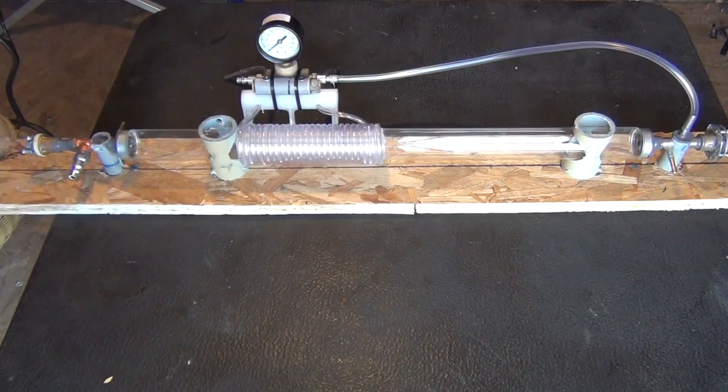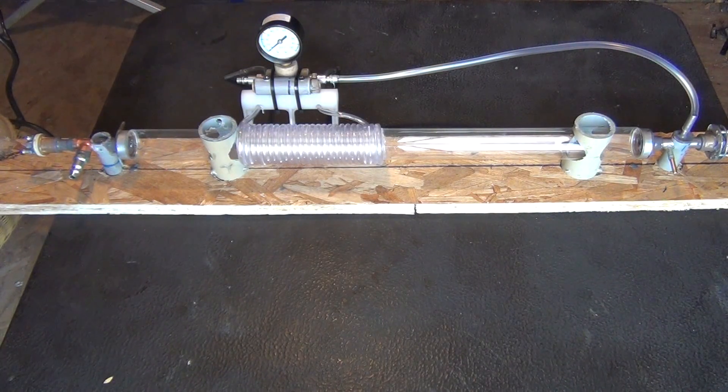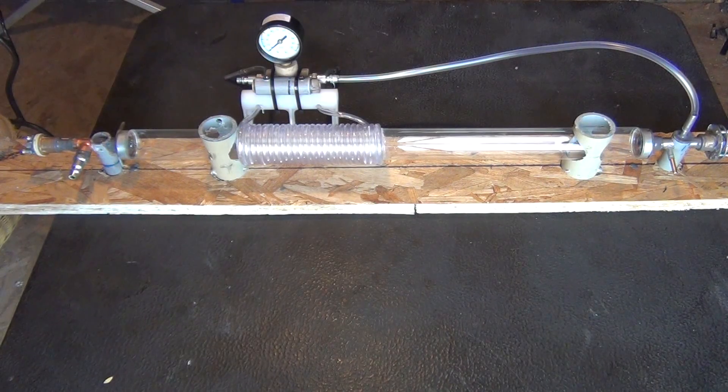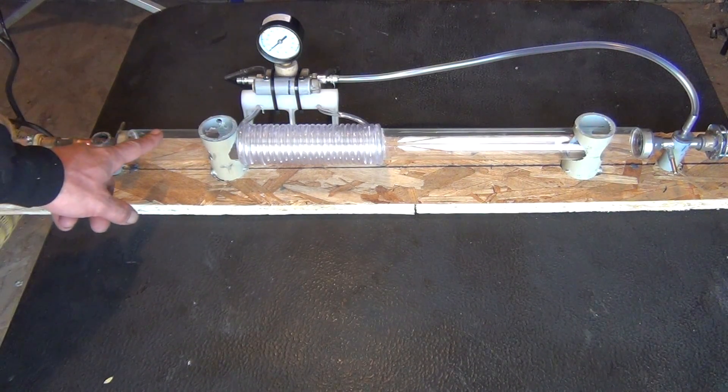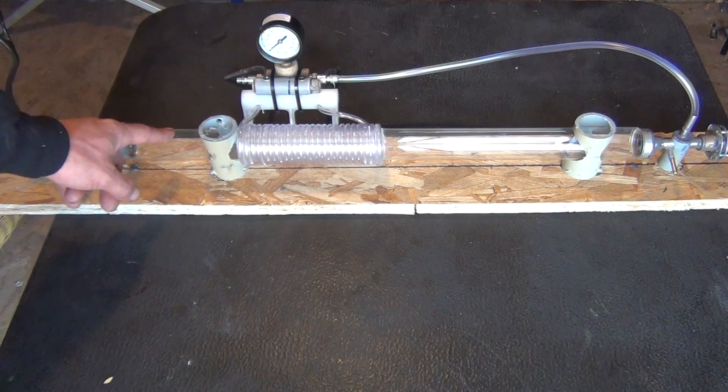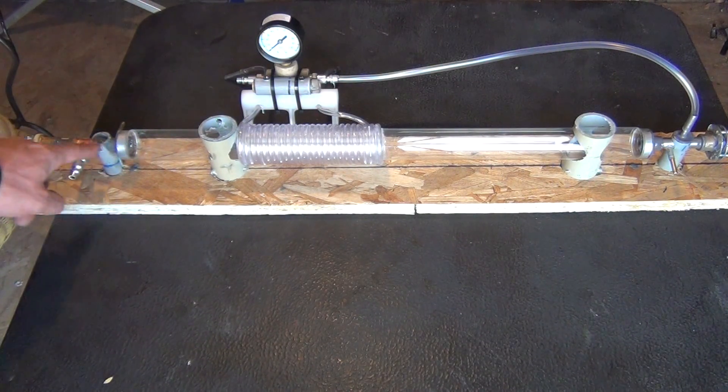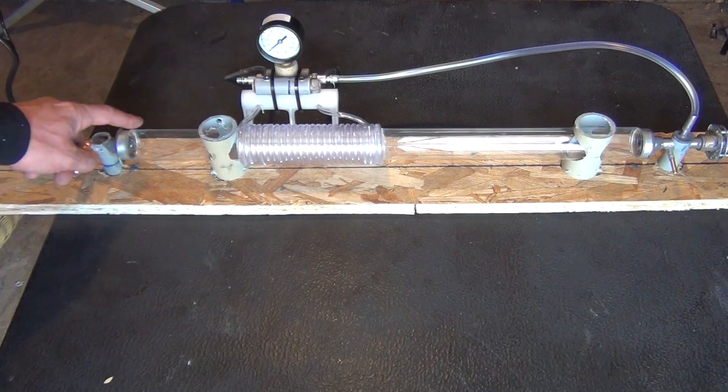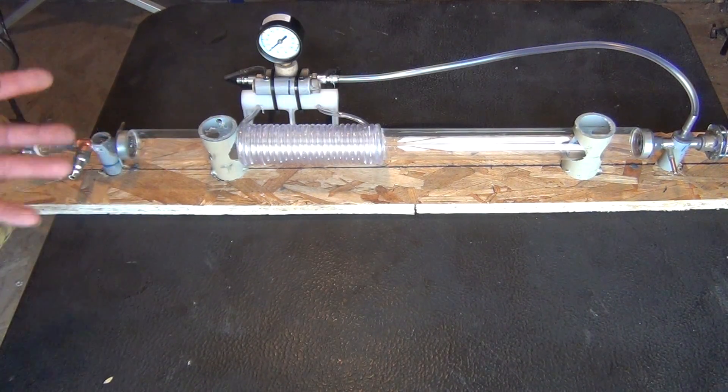Alright folks real quickly I want to walk you through how you could modify the design that I've just showed you how to make to make a more efficient or a more powerful laser system. First of all you'd want to use a smaller diameter glass tube for your main reaction chamber, for your amplification chamber. The larger glass tube here, larger in diameter than my tubing in the end, is actually going to produce some random photons outside the main beam and cast some of that as a loss.